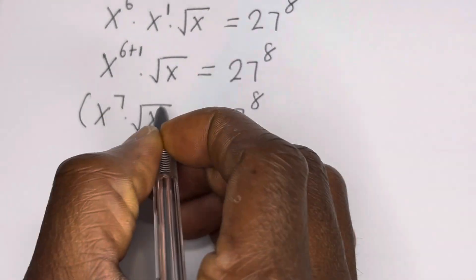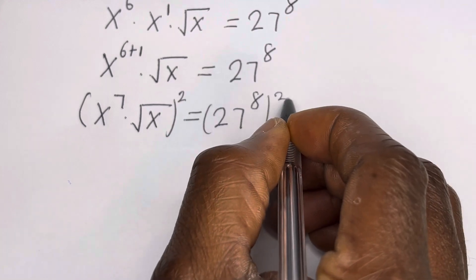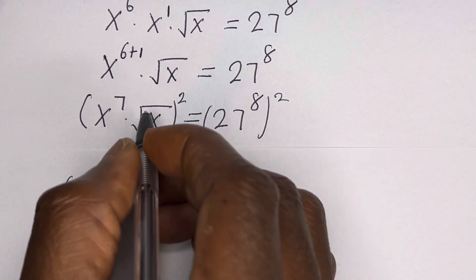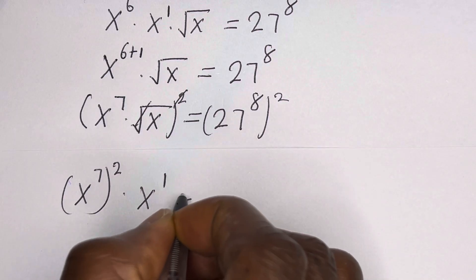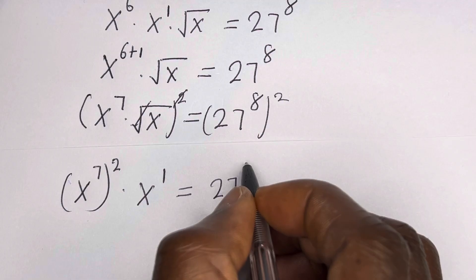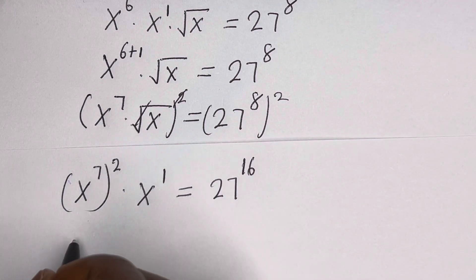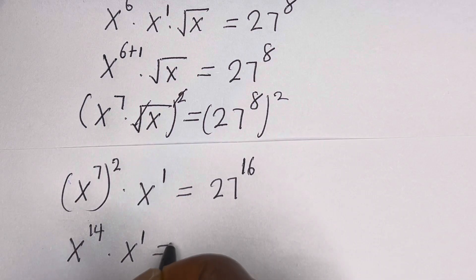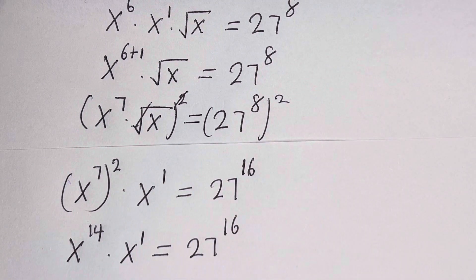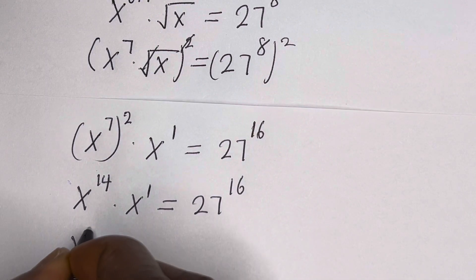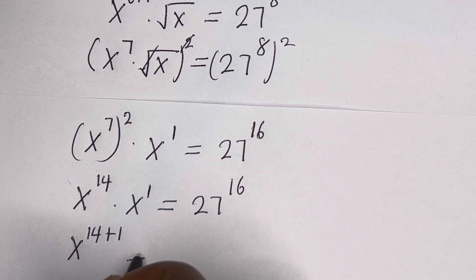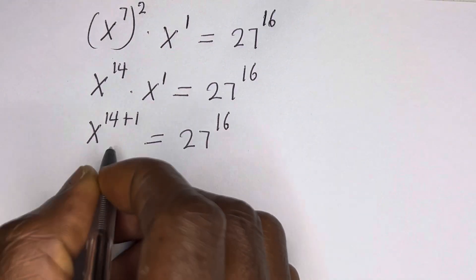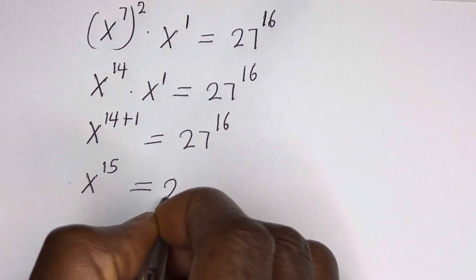Let us square both sides of this equation again. Here will be S raised to power 7 times 2, that is S raised to power 14, multiplied by S raised to power 1, is equal to 27 raised to power 16. Then this is S raised to power 14 plus 1 is equal to 27 raised to power 16.